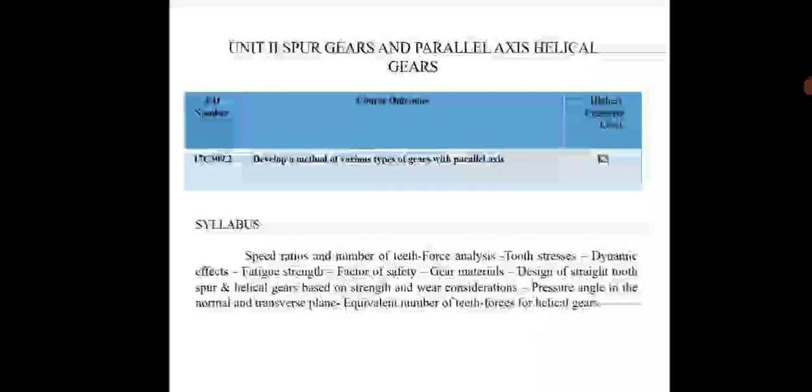The syllabus of unit 2 is: spur gears and parallel axis helical gears, speed ratios and number of teeth, force analysis, tooth stresses, dynamic effects, fatigue strength, factor of safety, gear materials, design of straight tooth spur and helical gears based on strength and wear consideration, pressure angle in the normal and transverse plane, equivalent number of teeth, and forces for helical gears.